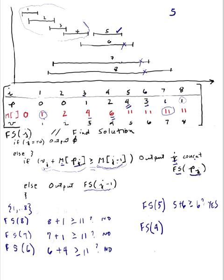Find solution for the set 1, 2, 3, 4. So FS of 4, clearly not 0, so I need to say V of 4 is 4 plus M of P of 4. P of 4 is 2, right there. M of 2 is 2, so plus 2. Is that greater than or equal to M of 4 minus 1? That's M of 3, which is 4. The answer is yes. 6 is greater than 4. So I need to output 4 and concatenate the FS, P of 4. So FS, P of 4, P of 4 is 2. So 4 is included. Now I need to consider what are the elements in that set right there, 1 and 2.